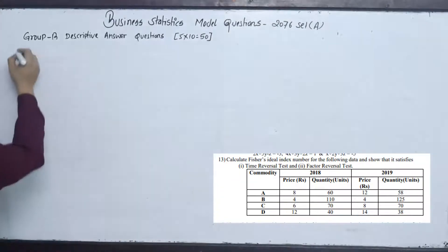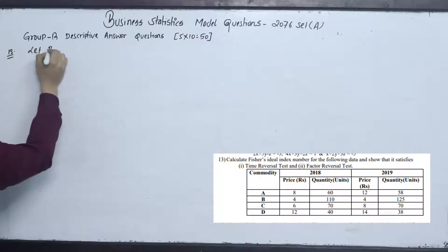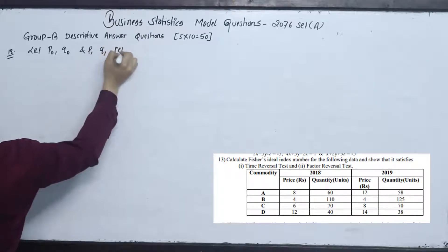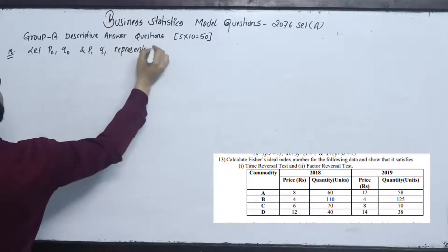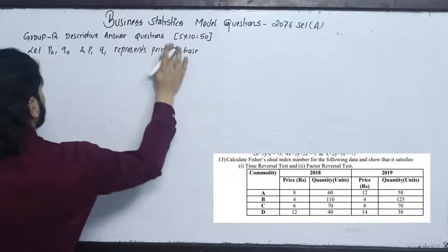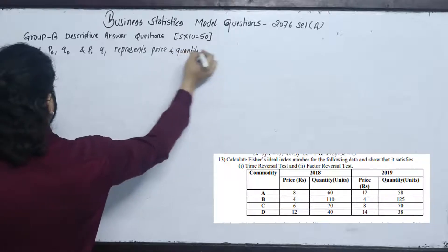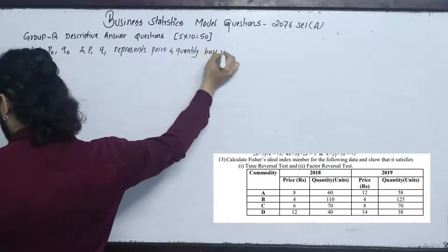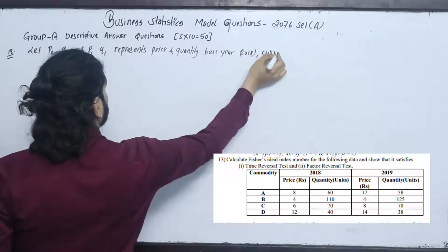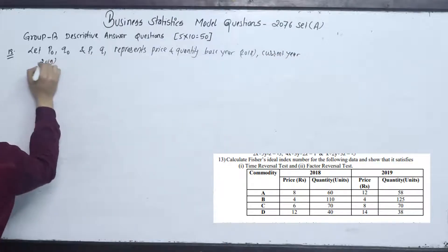Index number 13. Let P0, Q0 and P1, Q1 represent the price and quantity of the base year and the current year respectively. Base year is 2018 and current year is 2019.